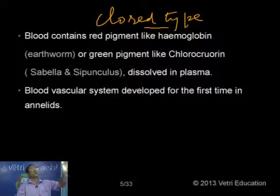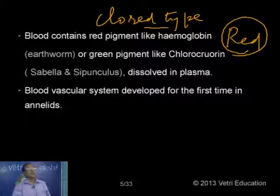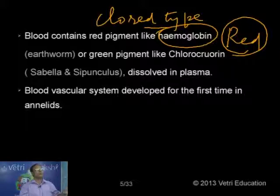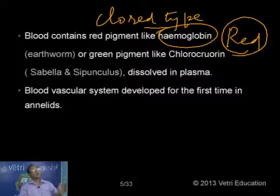Annelida developed a circulatory system of the closed type, and the blood is red in color, just like human blood, because it contains the respiratory pigment hemoglobin. But there is one difference: in our case, hemoglobin is formed in the RBC. In the case of earthworm, it is not formed in the RBC because RBCs are absent — we have cells called corpuscles only. The pigment is dissolved in plasma, not contained in RBCs, and that is why it is also called erythrocruorin — simply dissolved in plasma.